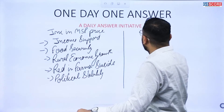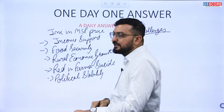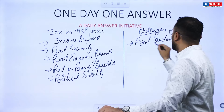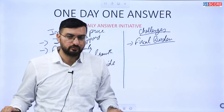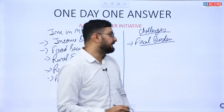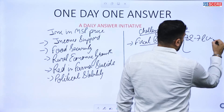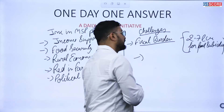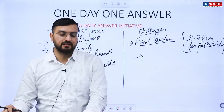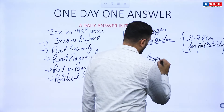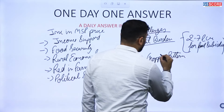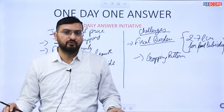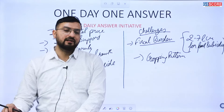However, rising MSP also brings challenges. The first challenge is increased fiscal burden on the government. In financial year 2023-24, the government allocated roughly 2.7 lakh crore rupees for food subsidies, and continuously increasing MSP will further widen the fiscal deficit. The second challenge is a skewed cropping pattern — MSP encourages monoculture, as farmers prefer to grow only MSP-supported crops like wheat and rice, reducing crop diversification.